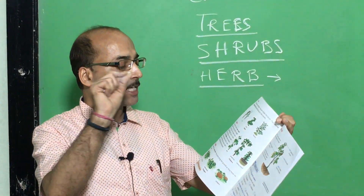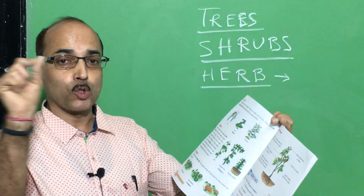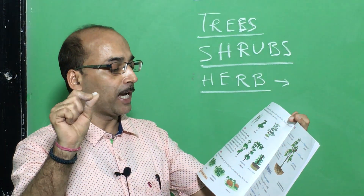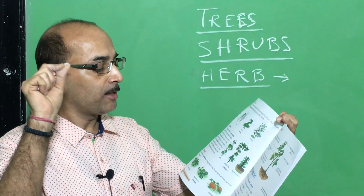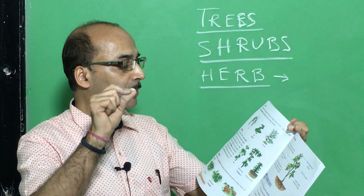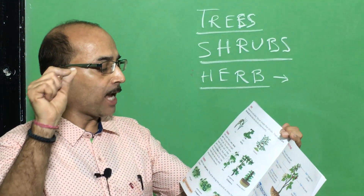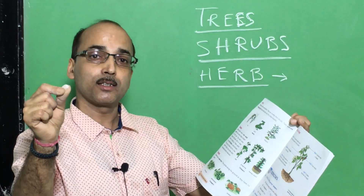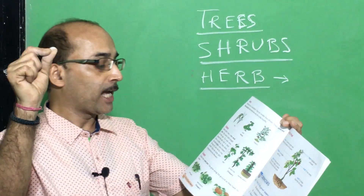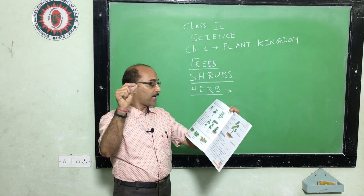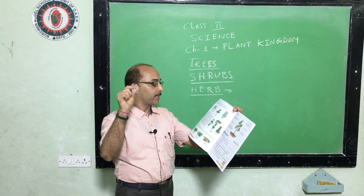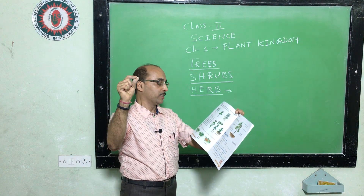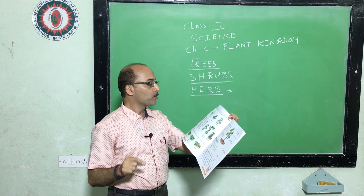Note down or underline the examples: pea, grape vine, and money plant. Some climbers like peas and beans live for a few months, and others like money plant and grape vine live for a few years.